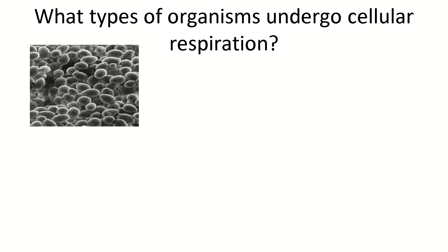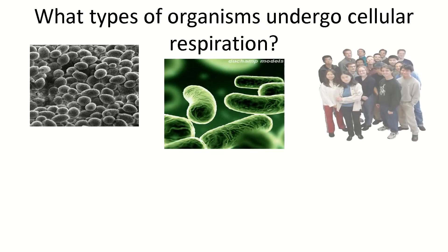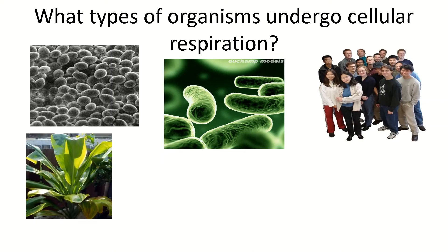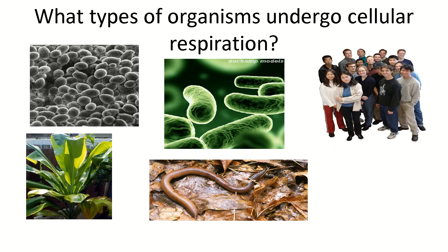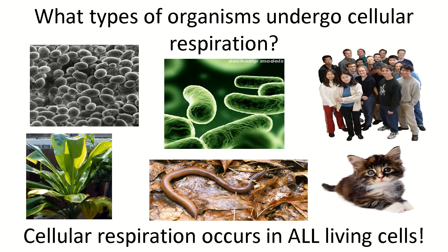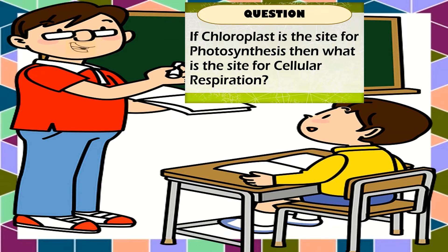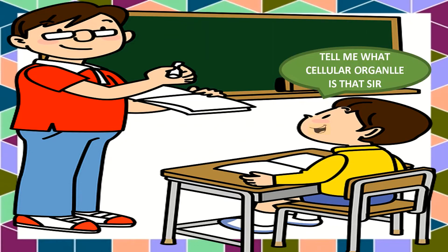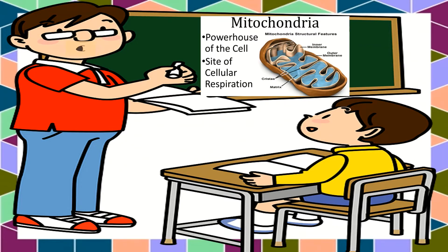There are different bacteria, microorganisms, human beings, and other animals that undergo cellular respiration. Plants also undergo cellular respiration, as do worms and some other animals. Cellular respiration occurs in all living cells. Marco, if chloroplast is the site for photosynthesis, then what is the site for cellular respiration? It is the mitochondria — it is the powerhouse of the cell and it is the site for cellular respiration.